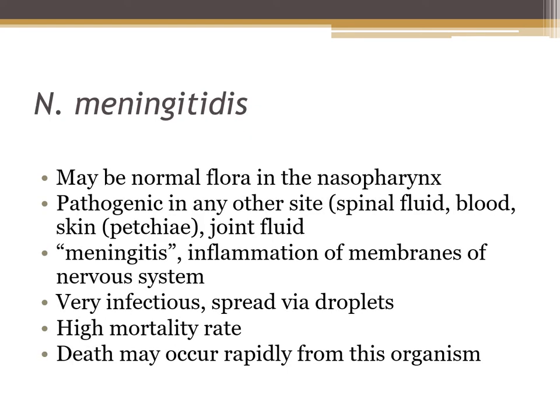To identify Neisseria meningitidis, you have to understand that it is normal flora in up to 30% of the population in the nasopharyngeal area. It can be pathogenic at any other body site, including the spinal fluid, the blood, and the skin — where you may see a rash known as petechiae — and it can be a pathogen of the joint fluid.